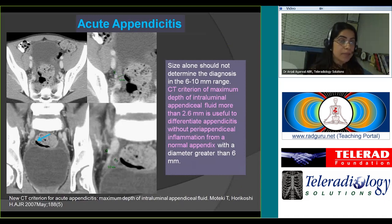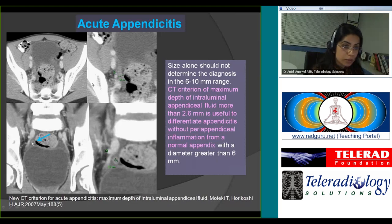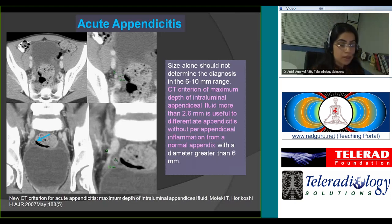An interesting sign described in the literature — there was a paper presented from Mass General at the American Society of Emergency Radiology meeting this September describing its utility. The scenario is: you see a thickened appendix, the size is between 6 to 10 millimeters, but there is no fat stranding. In that case, you measure the depth of the intraluminal fluid. If this thickness is more than 2.6 millimeters, you can suggest appendicitis with a fair degree of confidence.